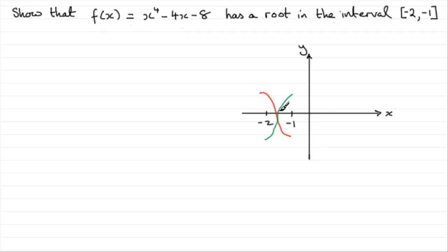I don't know, but if it was the red one, I'd find that if I was to work out f(-2), it would be a positive value, and f(-1), it would be a negative value. And if it was the green curve, f(-2) would be negative, and f(-1) would be positive.